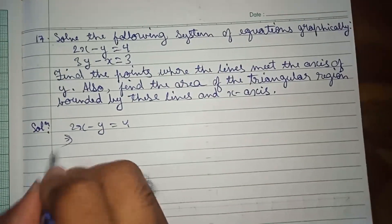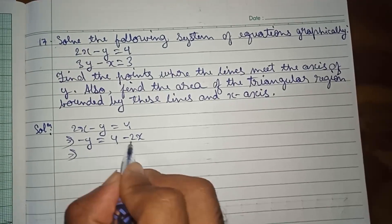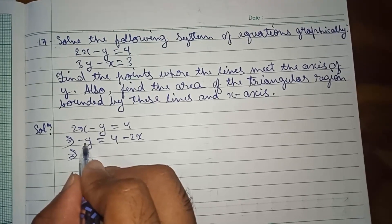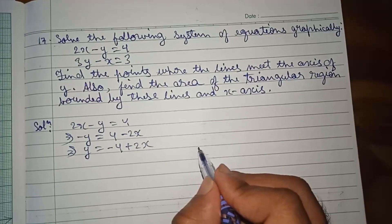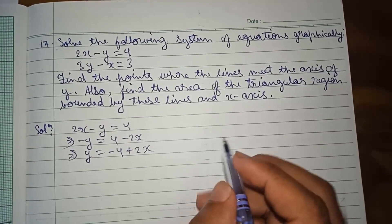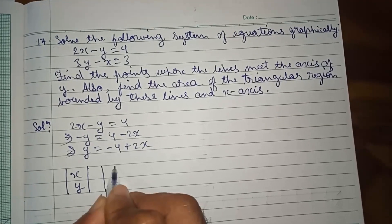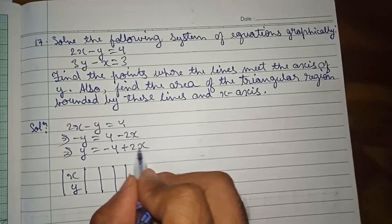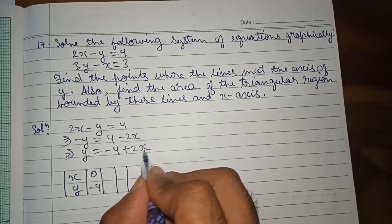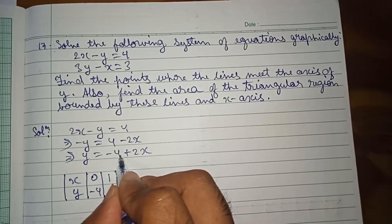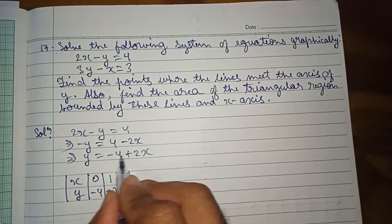For the equation 2x minus y equal to 4: when x is 0, 0 minus 4 gives y equals minus 4. When x is 1, 2 minus 4 gives y equals minus 2. When x is 2, 4 minus 4 gives y equals 0.